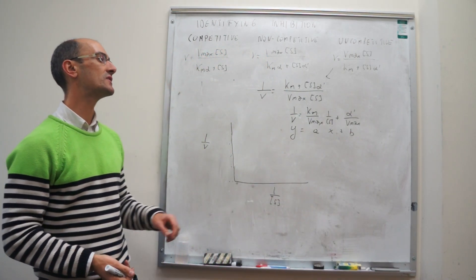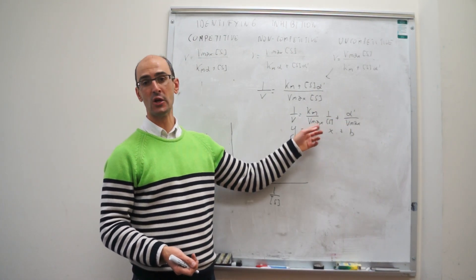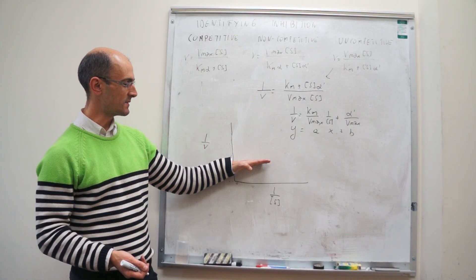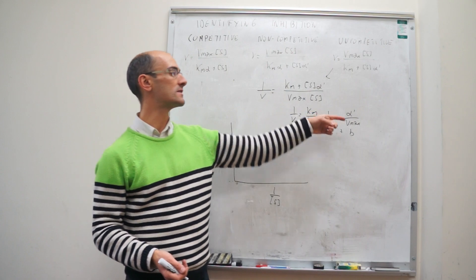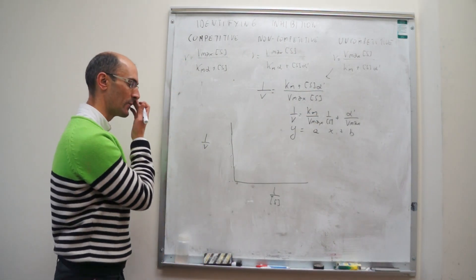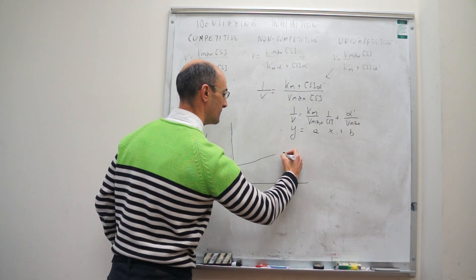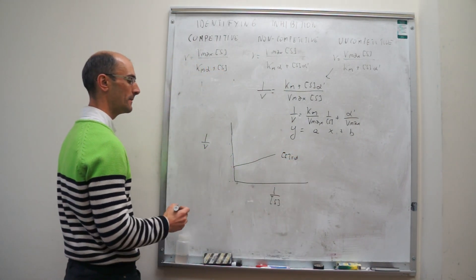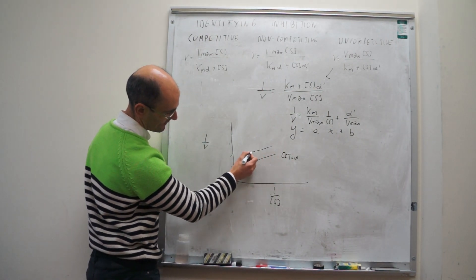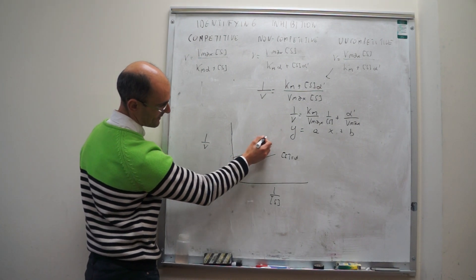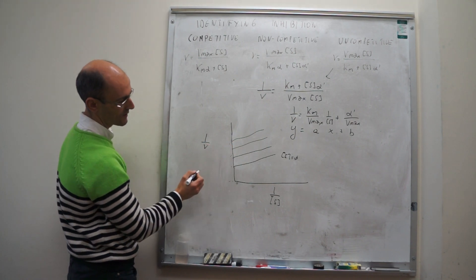Since the slope doesn't change when you vary inhibitor concentration, you should expect parallel lines, but the y-intercept increases as inhibitor concentration increases. So for uncompetitive inhibition: the uninhibited line is one reference, and as inhibitor concentration increases, parallel lines appear with progressively higher y-intercepts.